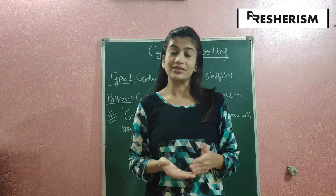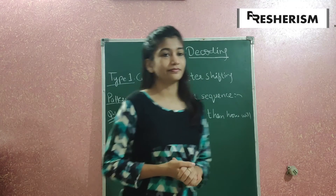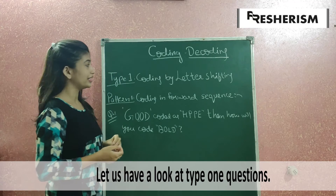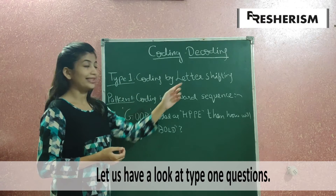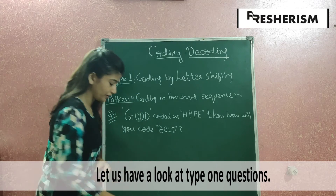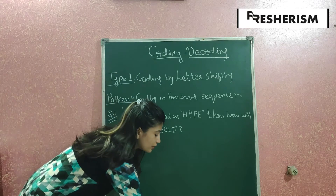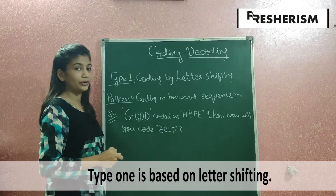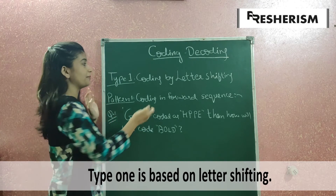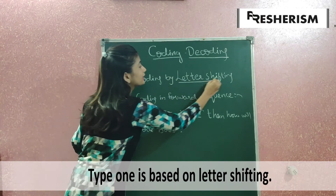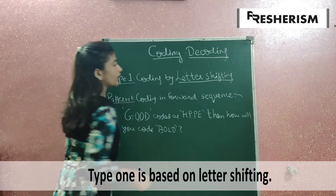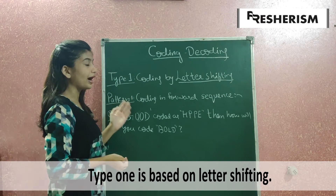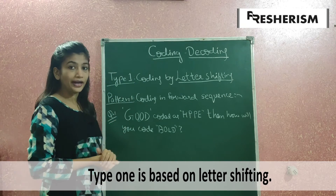Let's start with Type 1. The first type of coding and decoding is coding by letter shifting. In coding by letter shifting, there are various patterns.